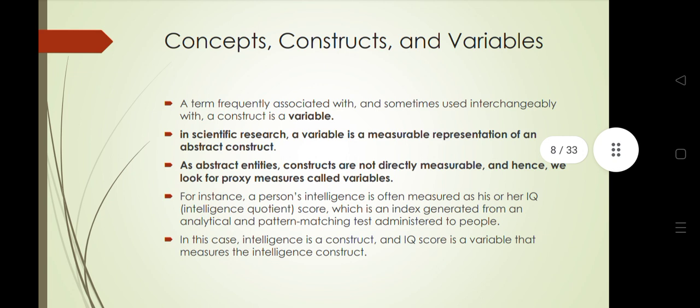Now we will discuss what a variable is. In scientific research, a variable is a measurable representation of an abstract construct. Variables are created by developing constructs into a measurable form.